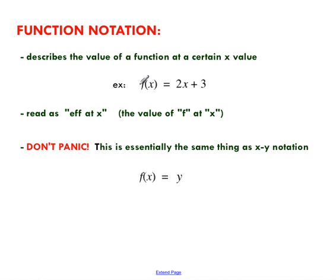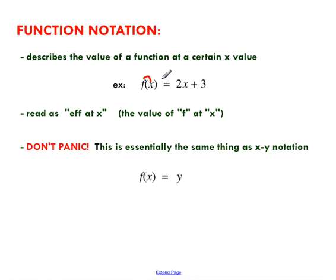For example, f at x — that's how we read this: f at x. This says the value of f, so the value of your function at x. This does not say f times x — that's one of the things people confuse. It says the value of the function at x.